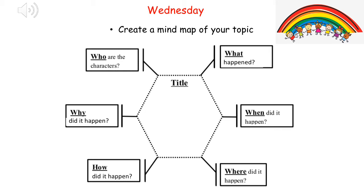You need to say what happened and put the key points underneath it. When did it happen? Where did it happen? How did it happen? Why did it happen? And who are the characters in your creative writing story? In the middle you can put the title and that's the topic that you have chosen.